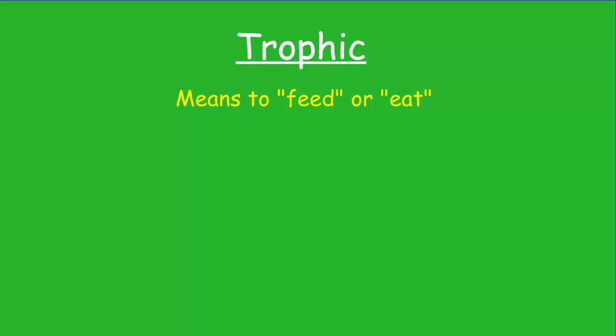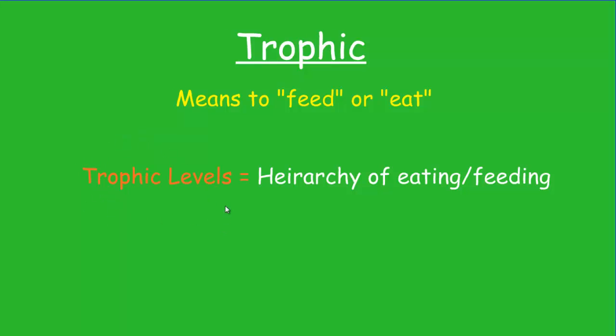Since this topic really helps us set the foundation for understanding the relationships within an ecosystem, especially as it pertains to the energy flowing through an ecosystem, we should bring up the term trophic. Trophic refers to feeding or eating, and that's what these relationships are all based on. Within an ecosystem, there's a hierarchy of eating or feeding, and we refer to that as trophic levels.